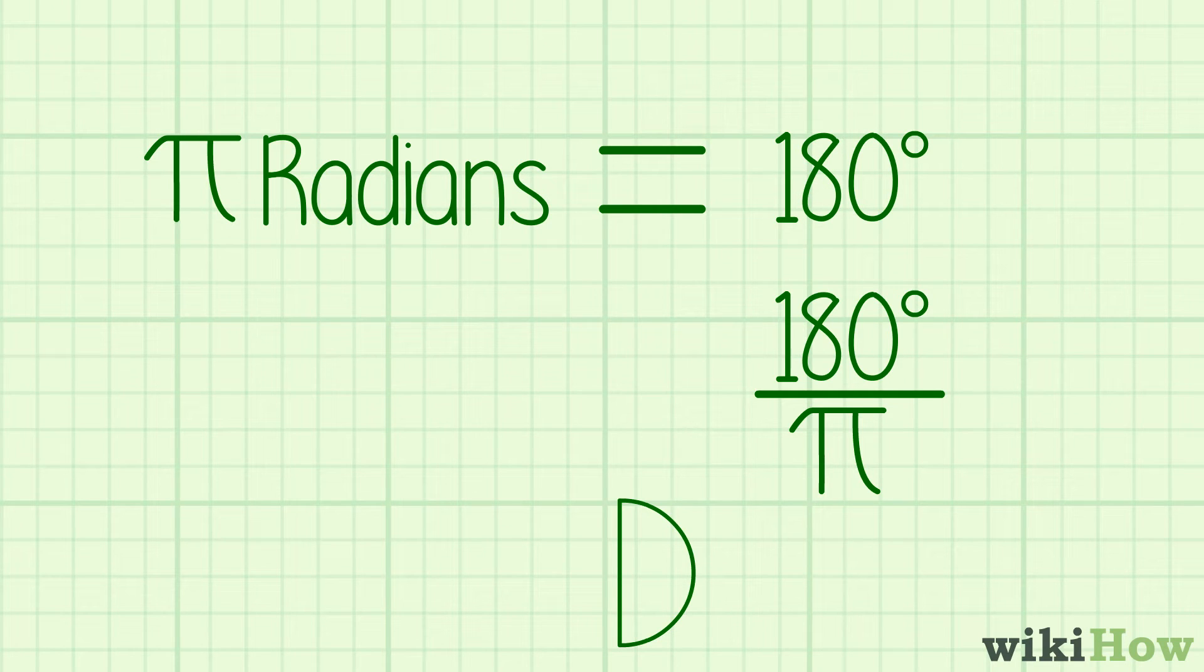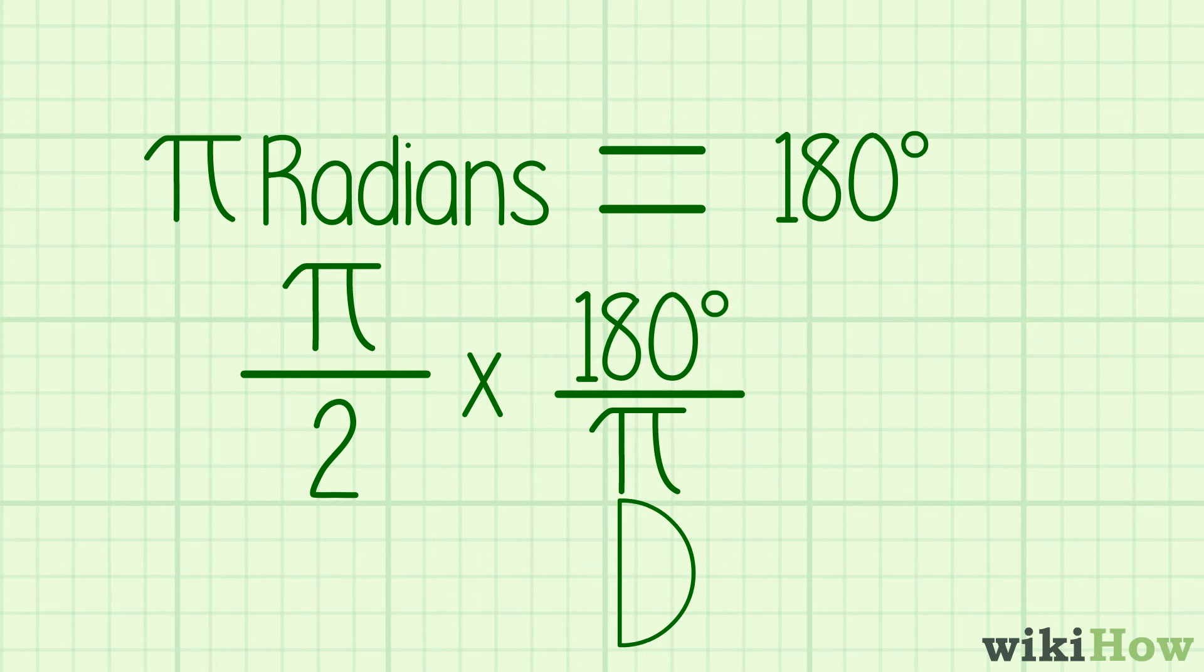For instance, let's say you have to convert half pi radians into degrees. Simply multiply pi over 2 by 180 over pi to get 90 degrees.